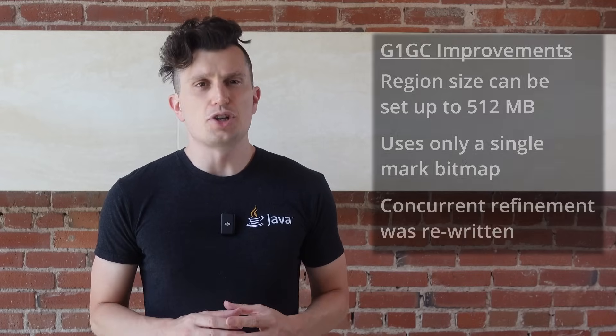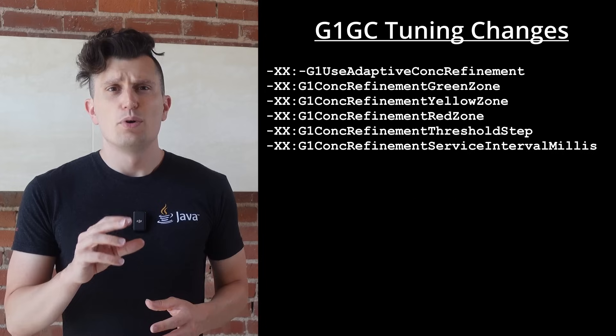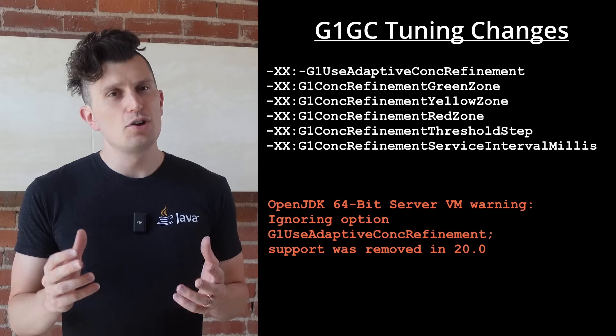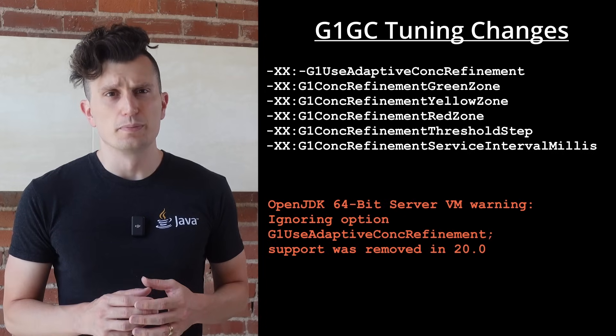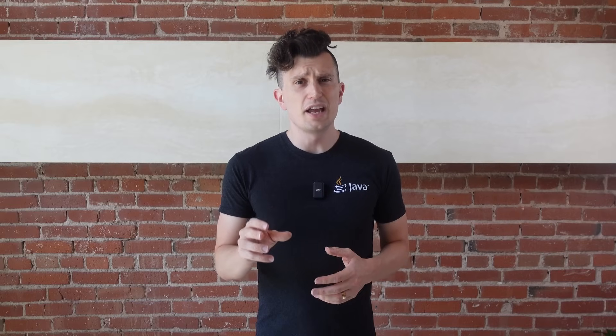As a result of these changes and others over the past four releases, there have been a few changes to how to tune G1 GC in JDK 21. For example, the concurrent refinement change means that certain VM arguments have been deprecated and are now no-ops, which will produce a warning message and will likely be removed in the future. Be sure to check out the GC tuning guide for more details on these tuning changes, and also Thomas Schatzl's blog for more details on the changes covered in this section — links in the description.